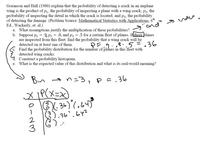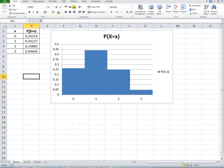3 choose 2, 0.36 squared, 0.64 to the first. Now when we calculate all of these, when we do the same thing here, here's what we would come up with.